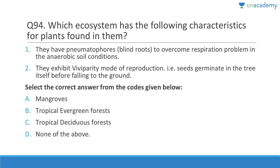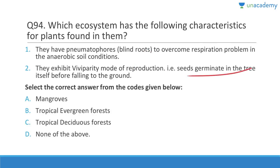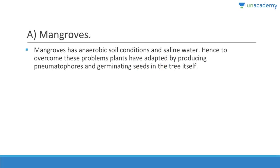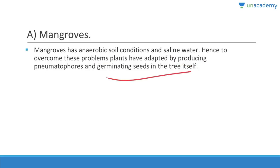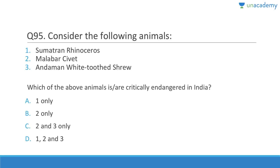Question 94: Which ecosystem has pneumatophores, blind roots to overcome respiration problems in anaerobic soil conditions, and exhibits viviparity — seeds germinate in the tree itself before falling to the ground? Answer is A, mangroves. Mangroves have anaerobic soil conditions and saline water, so plants have adapted by producing pneumatophores and germinating seeds in the tree itself.